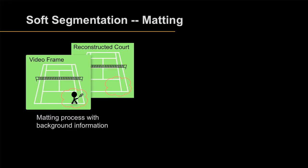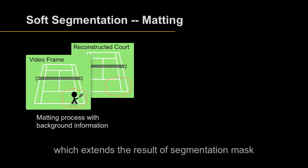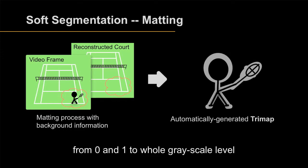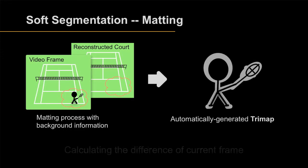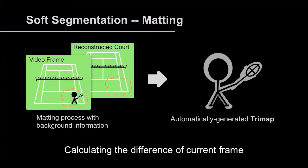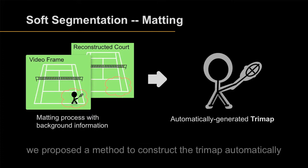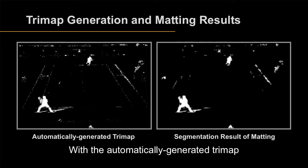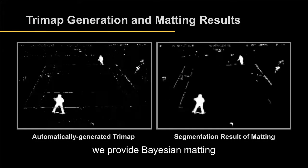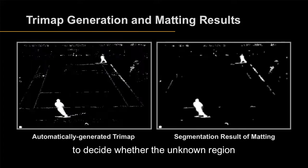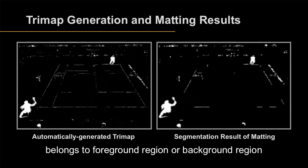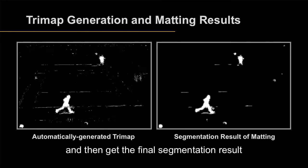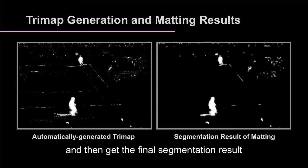To improve the segmentation results, we use soft segmentation, which extends the result of the segmentation mask from 0 and 1 to the whole grayscale level. Calculating the difference of the current frame and the reconstructed frame, we propose a method to construct a TriMap automatically. With the automatically generated TriMap, we apply matting to decide whether the unknown region belongs to the foreground or background region, and then get the final segmentation result.